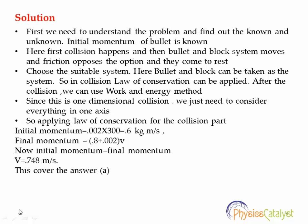Applying the law of conservation of momentum to the collision: initial momentum is mass times velocity, that is 0.002 × 300 = 0.6 kg·m/s. Final momentum is the total mass of block and bullet times the velocity of the system: (0.8 + 0.002) × V. Since initial momentum equals final momentum, we get V = 0.748 m/s. This is the velocity of the bullet-block system just after the bullet lodges into the block — this is answer A.